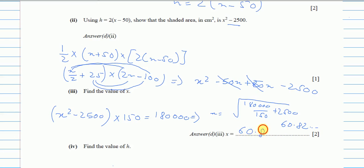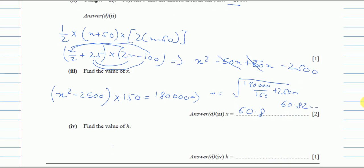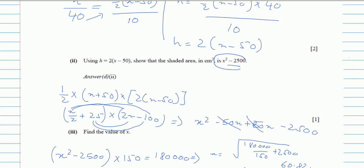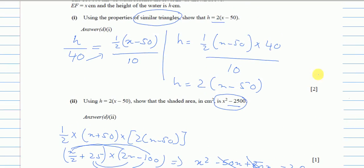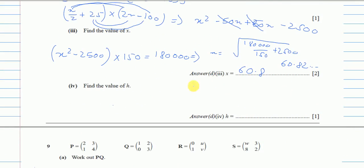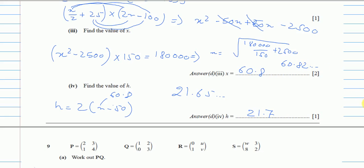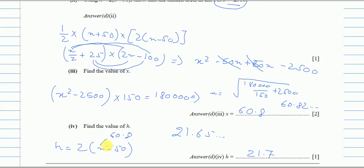Part D(iv): find the value of h. Using h = 2x − 50 and substituting x = 60.8: h = 2(60.8) − 50 = 121.6 − 50 = 71.6... Wait — using the more precise calculator value gives h = 21.65..., so to three significant figures h = 21.7 cm. Remember: don't skip any part just because you didn't know a previous part — you can always assume values.